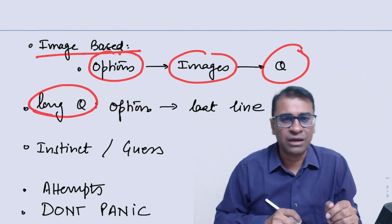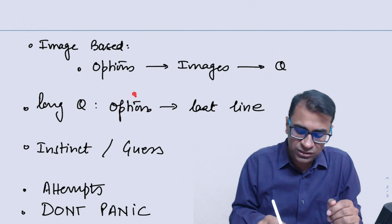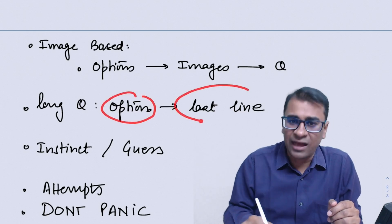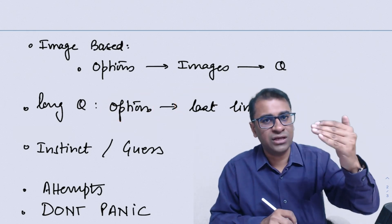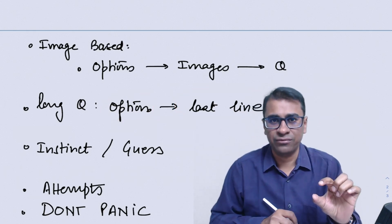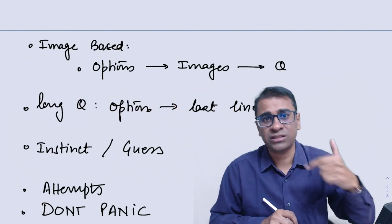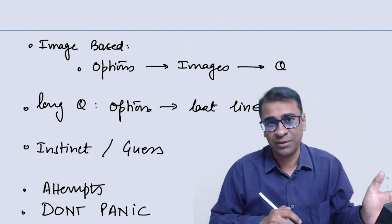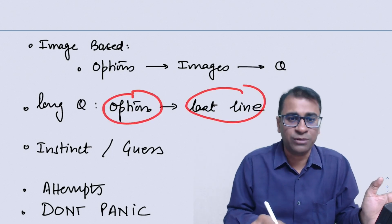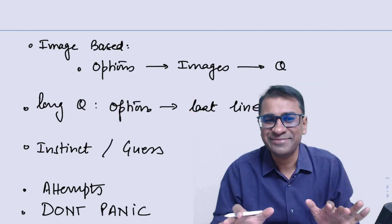For a very long question which is above five to seven lines, best is to look at the option, read the last line and see. Because what happens, many times there's a long clinical history, but the last line is a factual stuff. A long history asking you what is the most common cause of acute cholecystitis. Stones. That is a question that is often I've seen in the NEET PG. So read the last line and the option. Most likely you'll be correct.